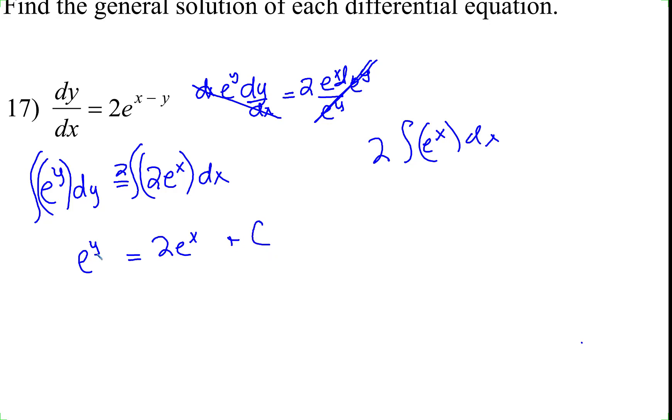To get y out of the exponent, we need to take the natural log of both sides - that whole thing right there. Using the laws of logarithms, the y will come down in front, and you'll have y times the natural log of e, which cancels to 1.